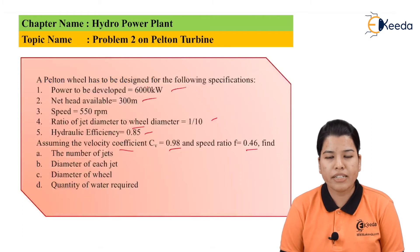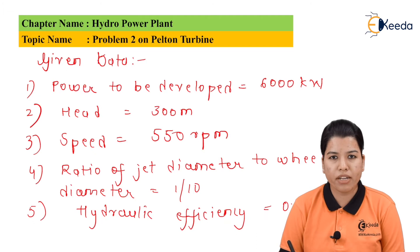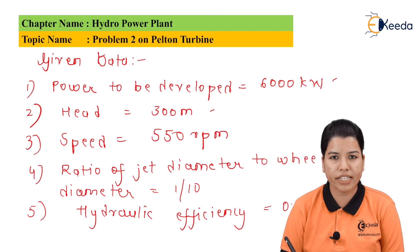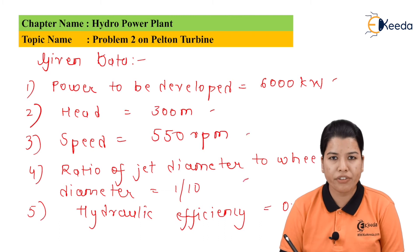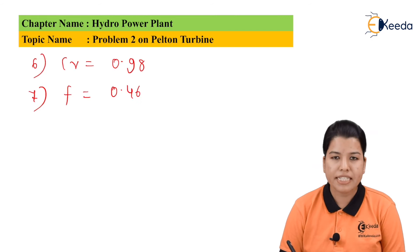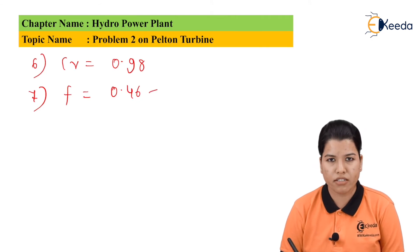Before solving this problem, let us write down whatever data is mentioned in the problem. The given data is: power to be developed is 6000 kilowatt; head is 300 meter; speed is 550 rpm; ratio of jet diameter to wheel diameter is 1 by 10; hydraulic efficiency is 0.85; Cv is 0.98; and F is 0.46.